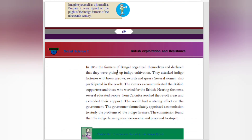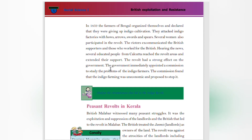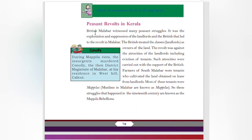In 1859, the farmers of Bengal organized themselves and declared they were giving up indigo cultivation. They attacked indigo factories with bows, arrows, and spears. Several women also participated in the revolt. Writers excommunicated British supporters and those who worked for the British. Educated people from Calcutta traveled to the revolt areas and extended their support. The revolt had a strong effect on the government. The government immediately appointed a commission to study the problems of indigo farmers. The commission found that indigo farming was uneconomic and proposed stopping it.